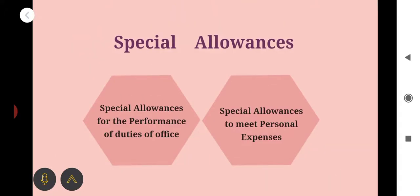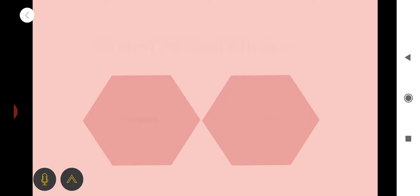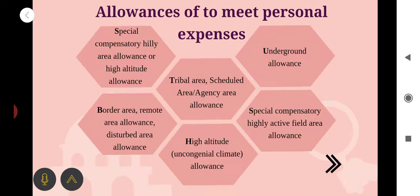The second category of special allowances is for the purpose of personal expenditure. This means it is an allowance granted to an employee to meet personal expenditure at the place of official duties, and it will be exempt from tax to the extent notified by the central government. Please note this important point. Examples include: special compensatory hilly area allowance, high altitude allowances, border area allowances, tribal area allowances, underground allowances, special compensatory allowances, etc.